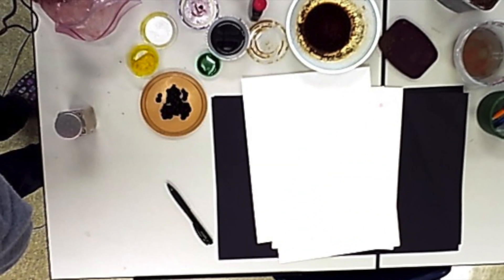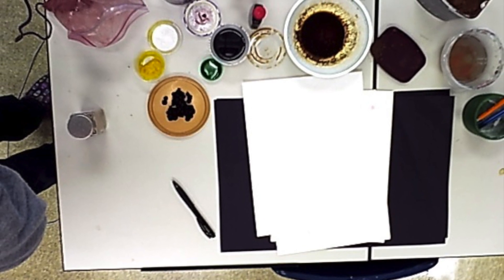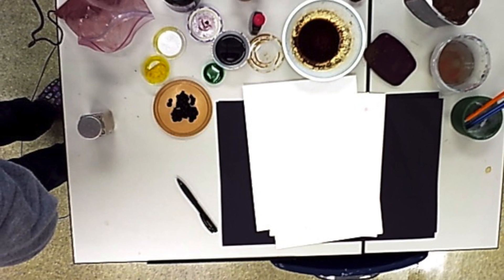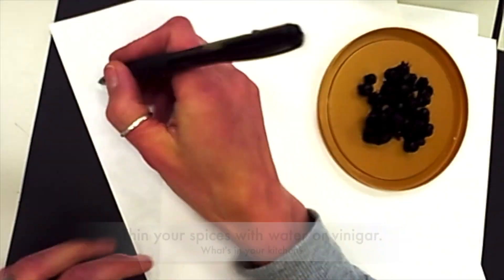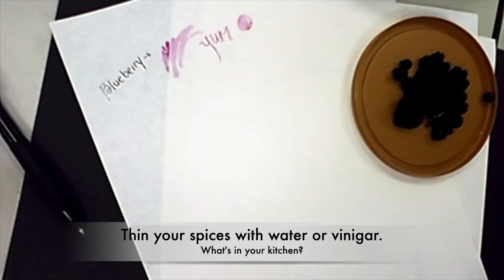So I got everything I could find out of the kitchen that could have a color and put it in little containers, set it down with some water and some vinegar and got started. I did dilute some of these.